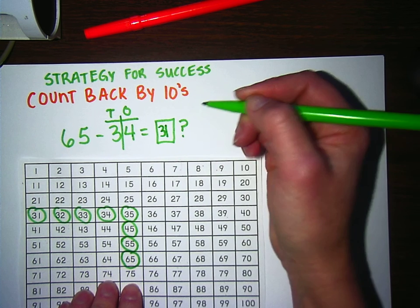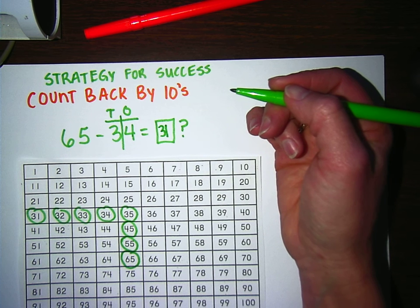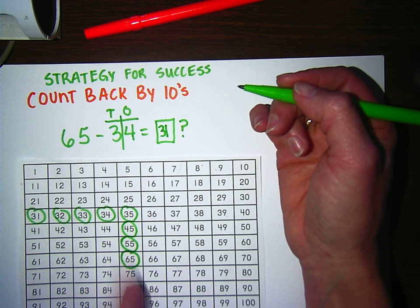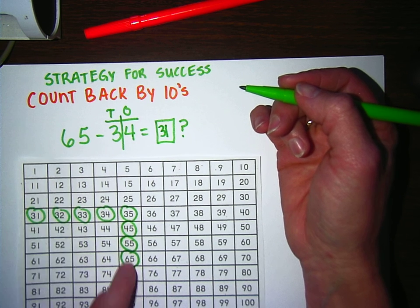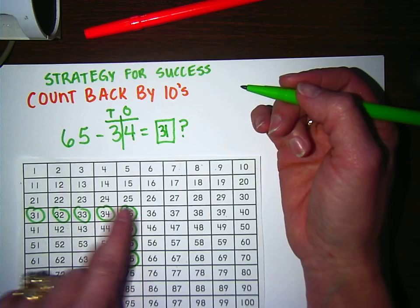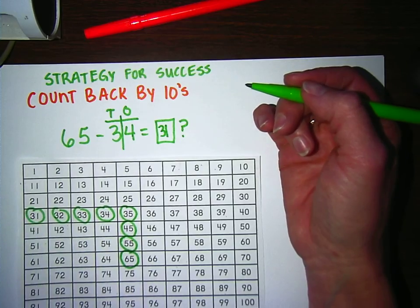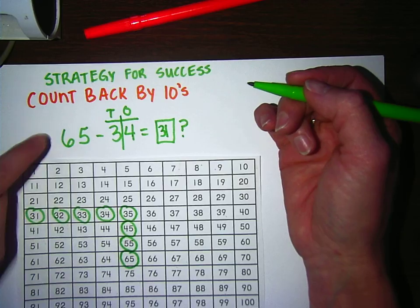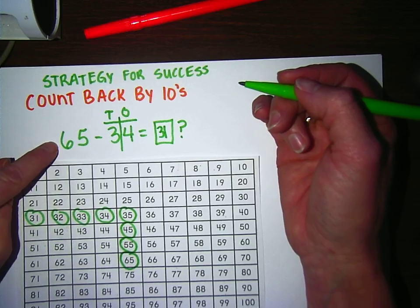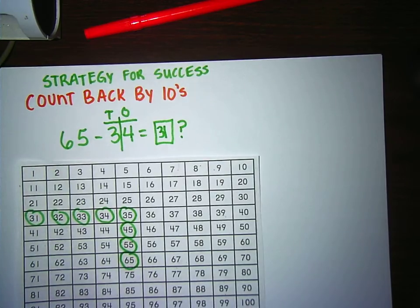And this works for any number on your hundreds chart. Simply locate the number, like 65, back up the correct number of tens, then back up the correct number of ones. And this is a great strategy for you all to use when solving these big double-digit subtraction problems. Good luck.